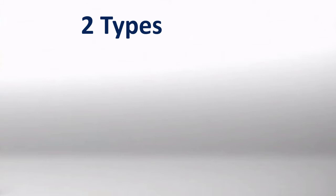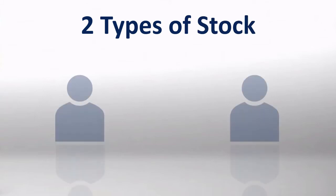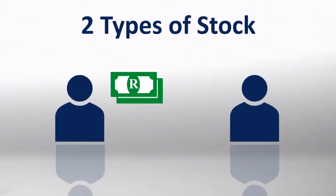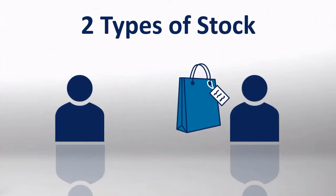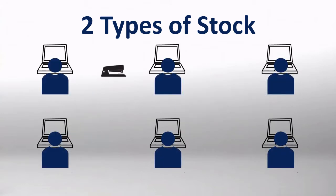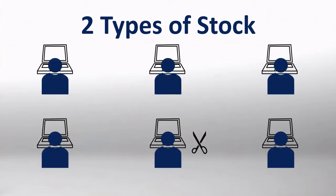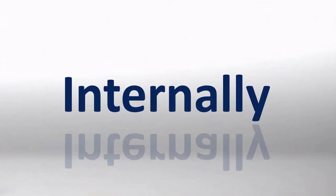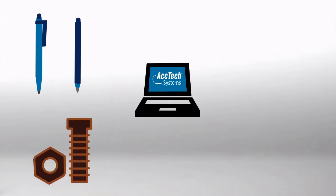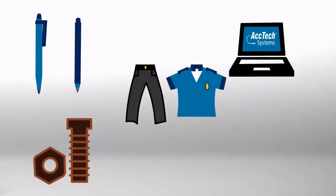Most businesses rely on two types of stock to do business. The first type is stock that you may sell to customers, and the second type is internal stock of items you need to run your business. These stock items used internally might be pens and pencils, nuts and bolts, computer equipment, or even clothing items.